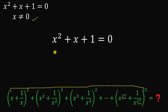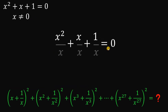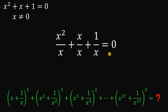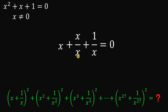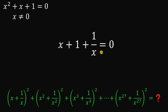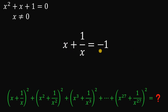Since x ≠ 0, we can divide all terms by x. x²/x is just x, and x/x is just 1. Subtracting 1 from both sides gives us x + 1/x = −1. So we've found the value of the first term: x + 1/x = −1.